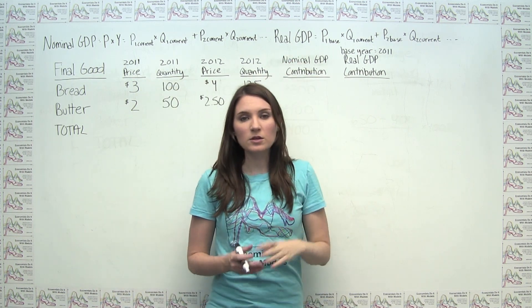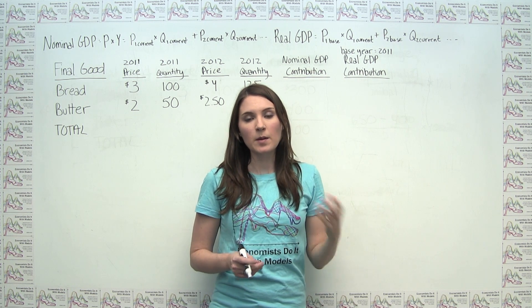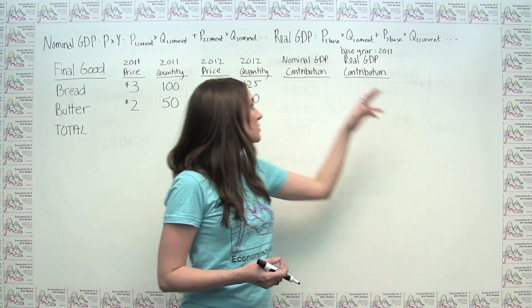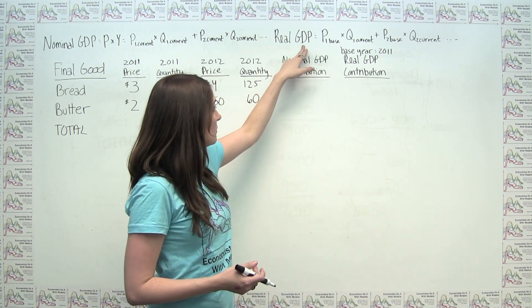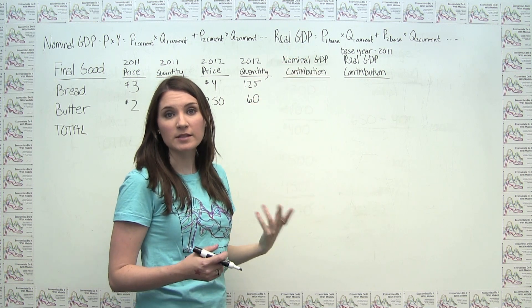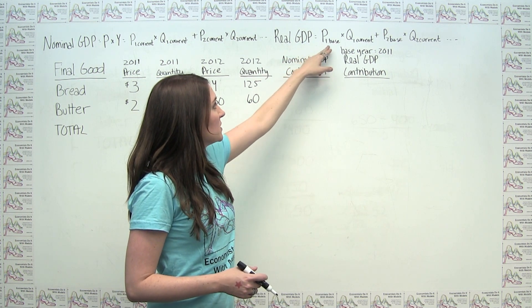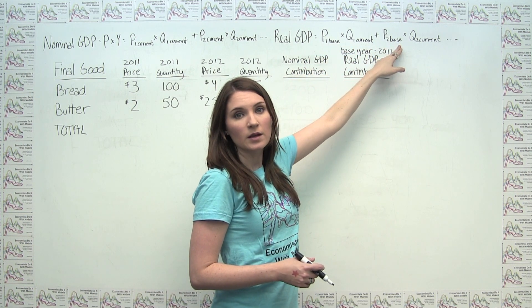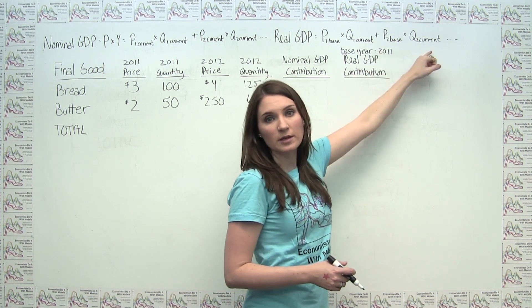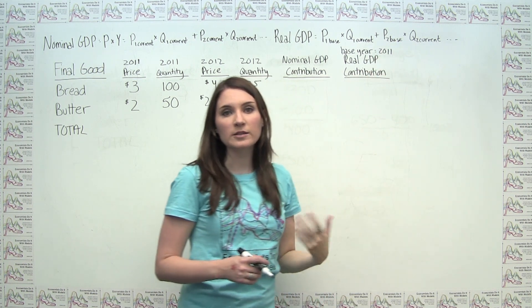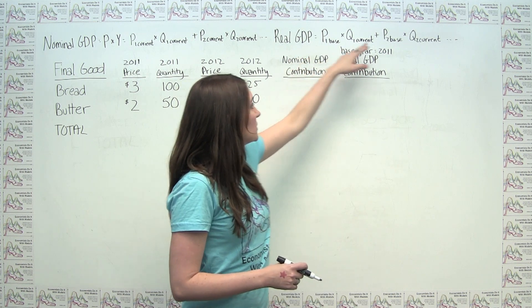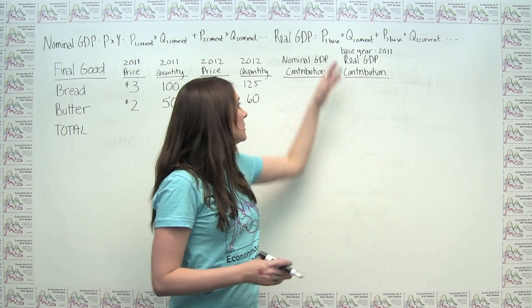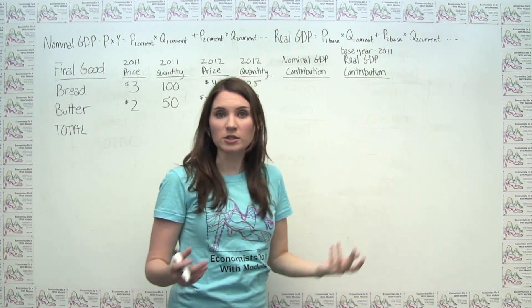Real GDP controls for changes in prices by holding prices constant from one year to the next. If we have a base year, we're always going to be taking the prices in that base year and then using the quantities of the current year. So when comparing GDP across years, we're not going to be changing these prices — all the changes coming in are going to be due to changes in quantities rather than changes in prices.